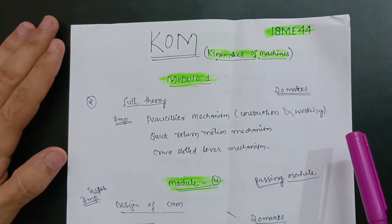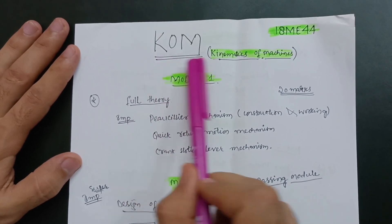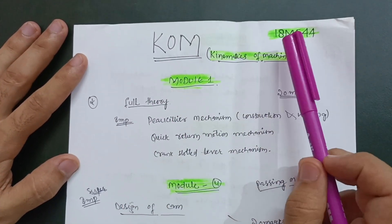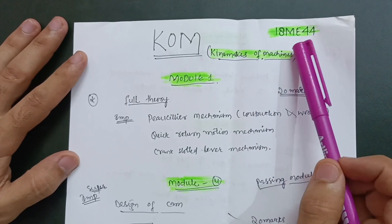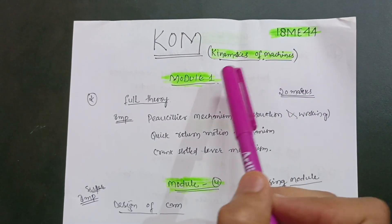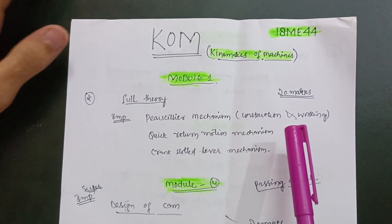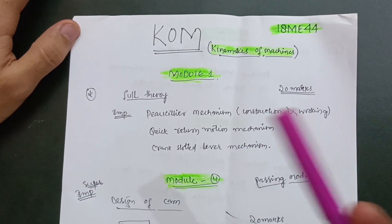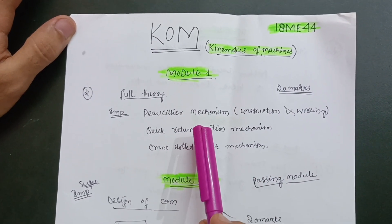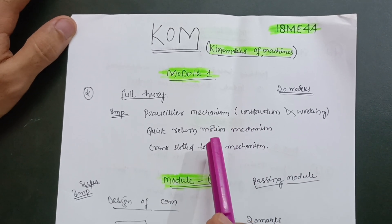Welcome back friends, hope you are doing well. Today I am with another subject - Kinematics of Machines, also called KOM, with subject code 18ME44. It is a core subject of mechanical engineering, and many students are struggling with it. Today I have another strategy for this subject: how many modules you have to attempt and which are the passing modules.